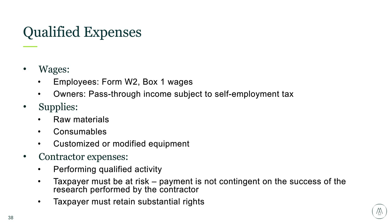There are some excluded items: foreign labor, whether internal or external, does not qualify. Software purchases would not qualify; however, contracting a software engineer to develop custom software could qualify as a contractor expense. Non-customized equipment doesn't qualify. Additional overhead-type items — payroll taxes, land, rentals — things not directly related to the R&D activities are also excluded.